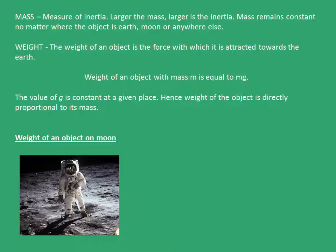Weight is the force with which an object is attracted towards the earth. Weight of an object is given by mass times the acceleration due to gravity, that is mg. The value of g is constant at a given place, hence the weight of an object is directly proportional to its mass.